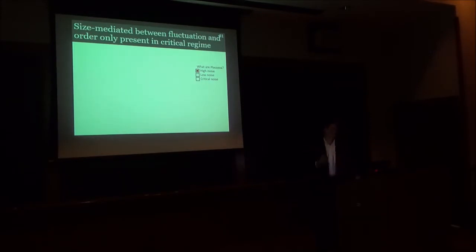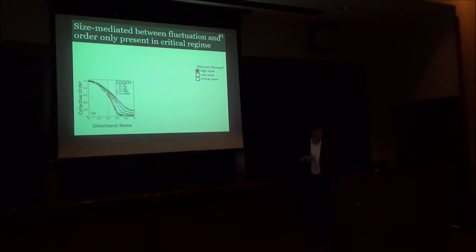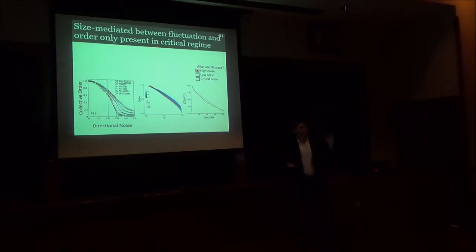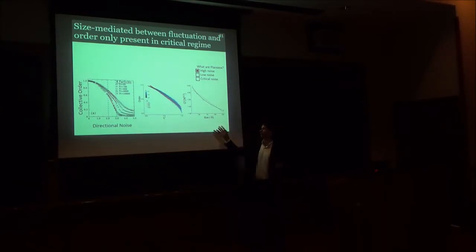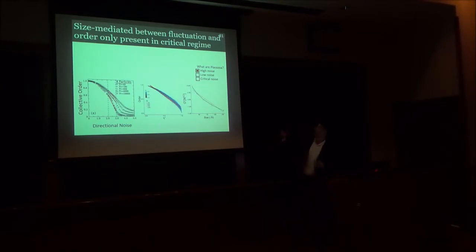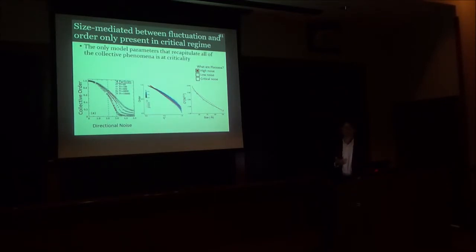We can also look at the collective order in the system and try to see how system size affects the relationship between noise and order. What I find is that, well first, it's only at the phase transition that you see this wide range of order. You don't see size affect collective order in the low noise case. But also, if you even look at the subtle effect of the slope of the relation between noise and order, you have a steeper relationship in larger systems than in smaller systems. To me, this suggests that the only parameter regime that recapitulates our empirical results is the critical noise regime and not the low noise regime.